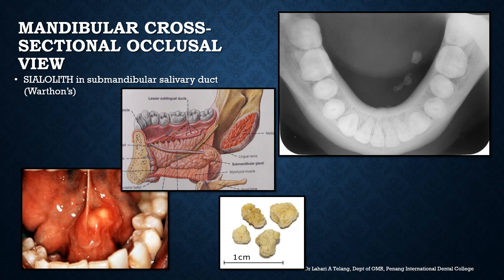Sialoliths are a common occurrence in the submandibular salivary duct. Wharton's duct is a more common location because of its tortuous course and the composition of saliva secreted by the submandibular gland. Sialoliths can vary in their radiopacity based on their calcification and density. The x-ray shown here is a cross-sectional occlusal view of the mandible showing radio-opacities in the proximal component of the salivary duct, very close to the orifice.